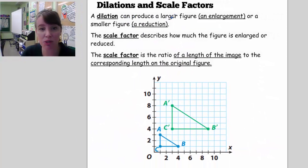A dilation can produce a figure, an enlargement, or a reduction, which is what we just saw. We saw a reduction. The scale factor describes how much the figure is enlarged or reduced.